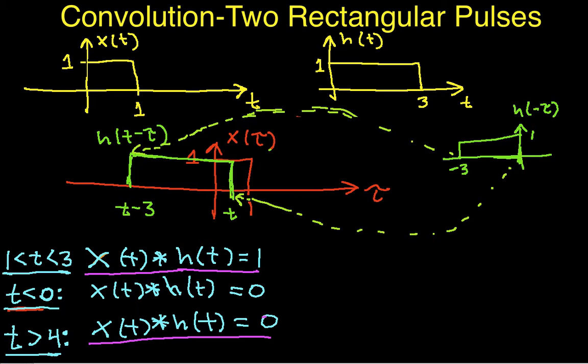Clearly, where X is equal to 0, the product is going to be 0, and that happens for all these values of tau less than 0, and out here. And we also have that H is 0 for values of tau greater than T. So the product of X and H now looks something like this. To get the area under this thing, I recognize that again, this is a 1, or a height of 1, and this guy here between 0 and T has a width of T. So the area of this rectangle is going to be T.